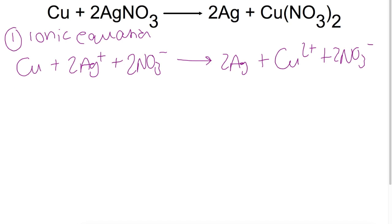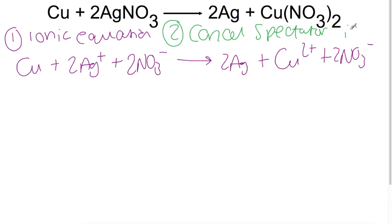Step two is to cancel any spectator ions. The spectator ions here are the nitrate ions, as they do not change on either side of the arrow, so we get rid of them. Step three is to write half equations — a reduction equation and an oxidation equation — splitting this equation back into the two half equations that created it.